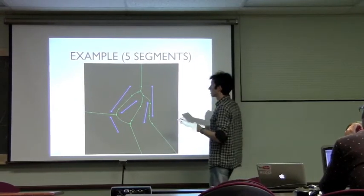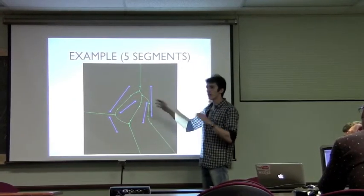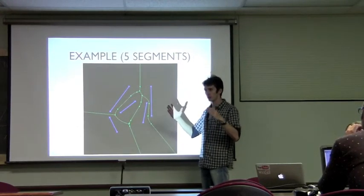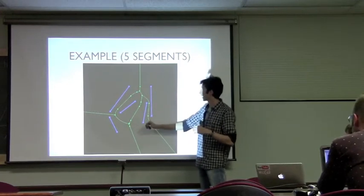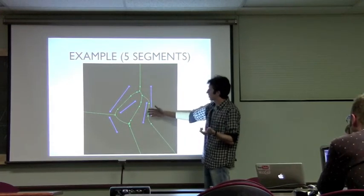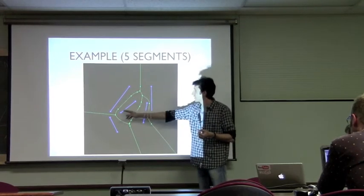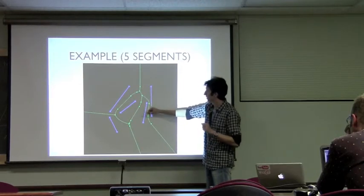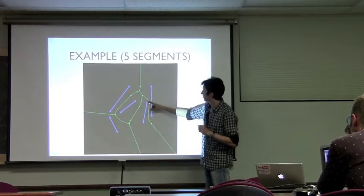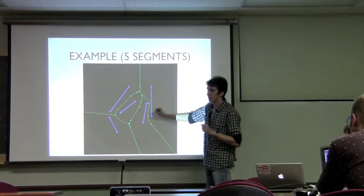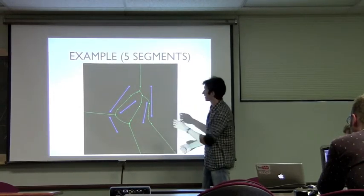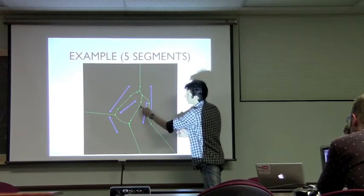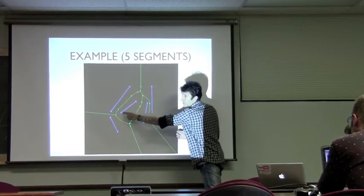How do I determine the edge? An edge is a set of points equidistant from the two closest objects. This edge is equidistant from this segment and this segment. This parabolic arc — which is not a segment — is equidistant from this point and this segment.